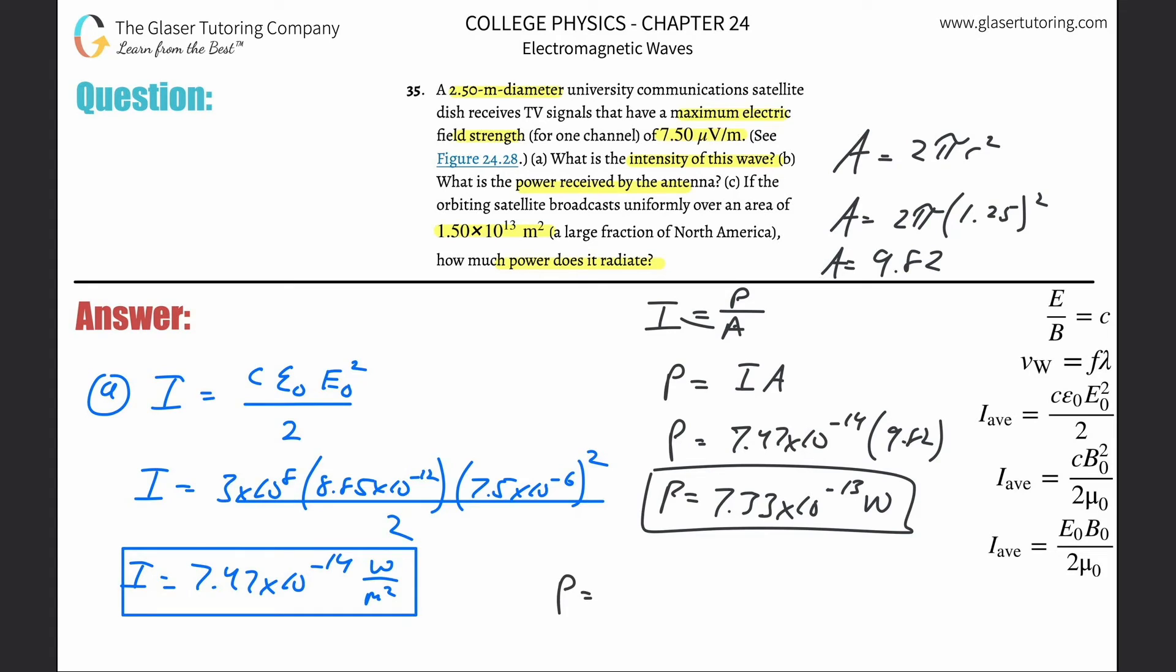In other words, that power will be equal to the intensity multiplied by the area. The intensity is the same thing: 7.47 times 10 to the minus 14th. But now the area is changed. Here's now the total area: 1.5 times 10 to the 13th. So just plug that stuff into the calculator and let's see what we get.